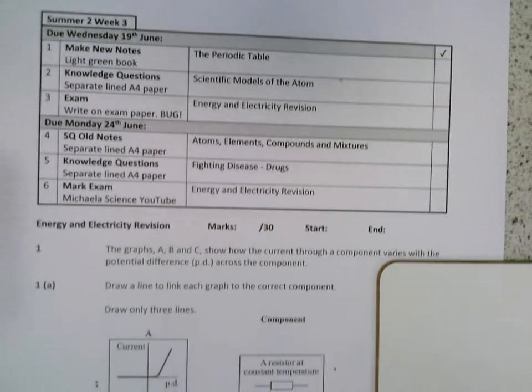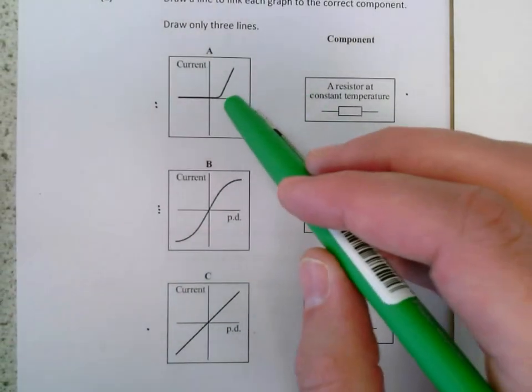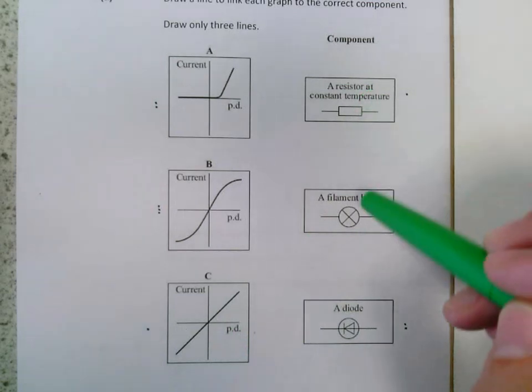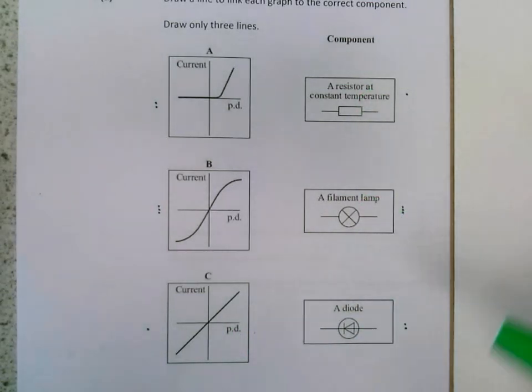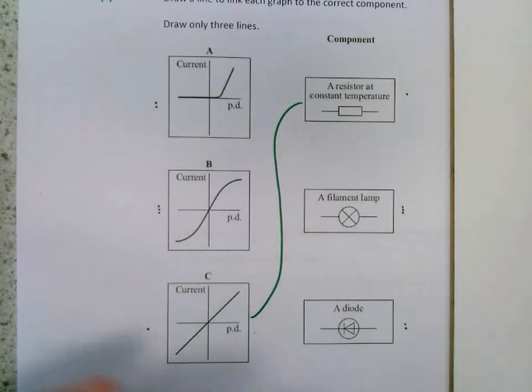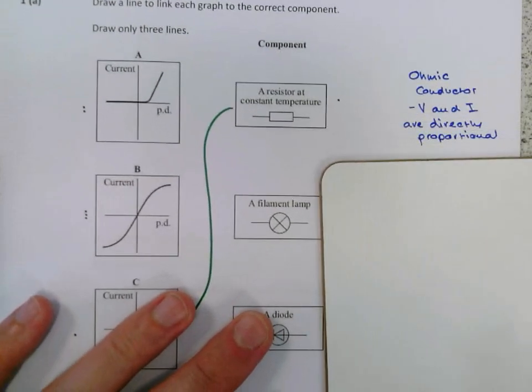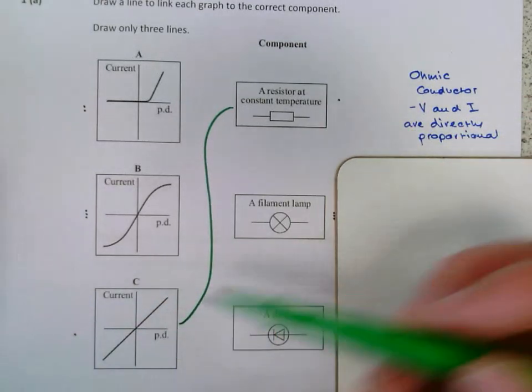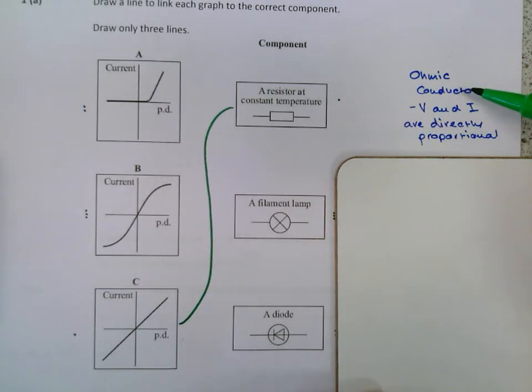This shouldn't be new to you. We've got three graphs and three components. The first one I'm going to talk about is this resistor. The resistor is represented by that graph down there. I've added some extra information here which I think is going to be really helpful. So the resistor is an ohmic conductor. What ohmic conductor means is that V and I are directly proportional. You can see that because this graph is a straight line through the origin. So that's a bit of a giveaway. The resistor is an ohmic conductor, and a straight line through the origin is the graph that it's going to produce.